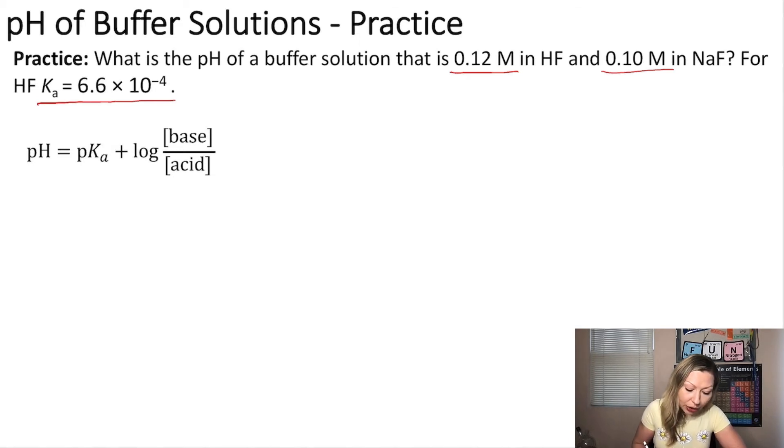So I'm just going to use the Henderson-Hasselbalch equation and plug in all my numbers. The pKa is simply the negative log of Ka, the acid dissociation constant, which in this case is 6.6 × 10^-4.